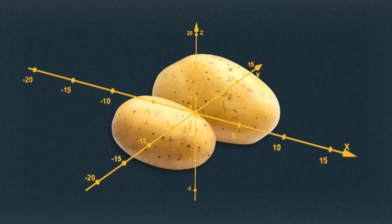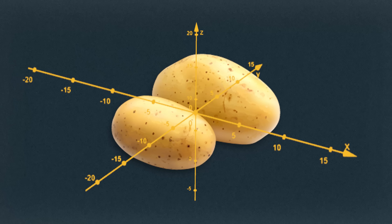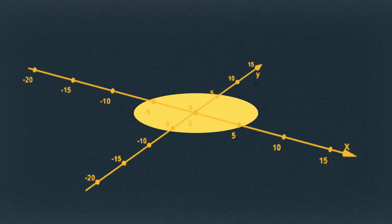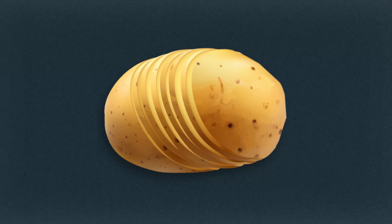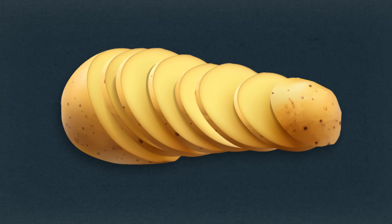Let's say we have a potato and you want to make potato chips from scratch. The potato is in three dimensions, and a potato chip is two dimensions because it's flat — just a little slice of potato. You take a potato, every slice — you turn three dimensions into two dimensions. That was easy.